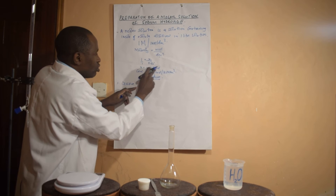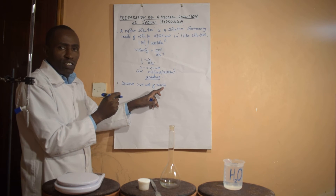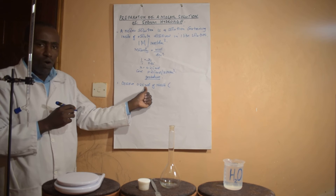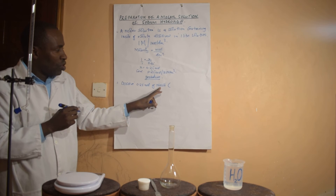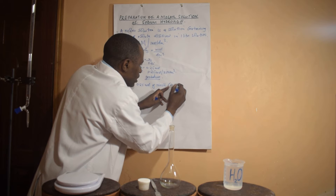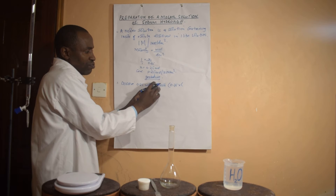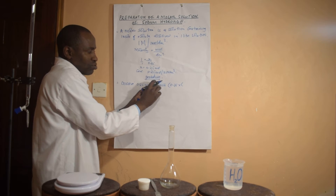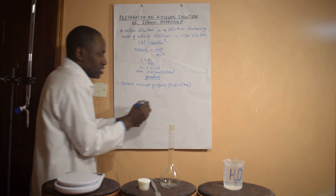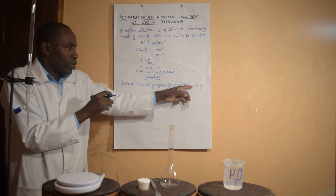I'm going to dissolve 0.25 moles of sodium hydroxide. We can convert this to mass: take the number of moles times the molar mass of sodium hydroxide. The molar mass of sodium hydroxide is: sodium is 23, oxygen is 16, hydrogen is 1 — that gives us 40 g/mol. So 0.25 moles times 40 equals 10 grams. Therefore, we're going to dissolve 10 grams of sodium hydroxide.